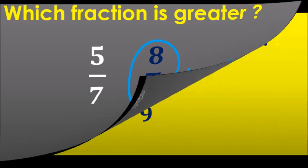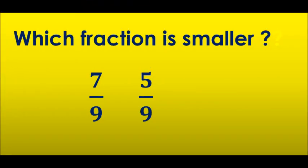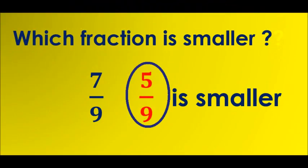Moving ahead, which fraction is smaller? Again, we have like denominators. Since they have asked us to find out which fraction is smaller, we have to compare 7 and 5. Of course, 5 is smaller. So 5 upon 9 is the smaller fraction.